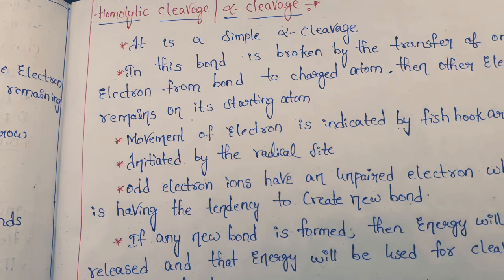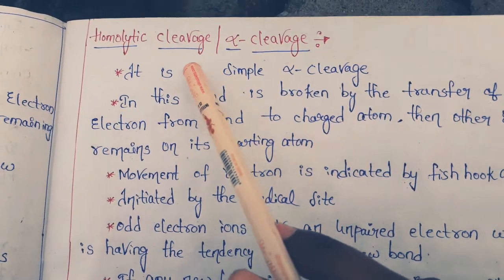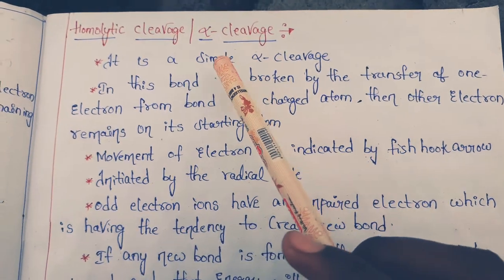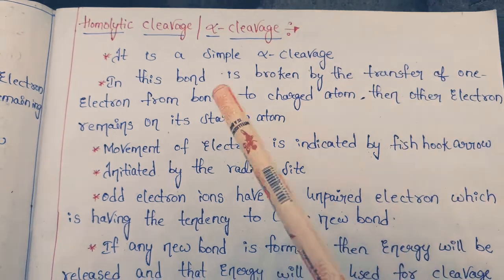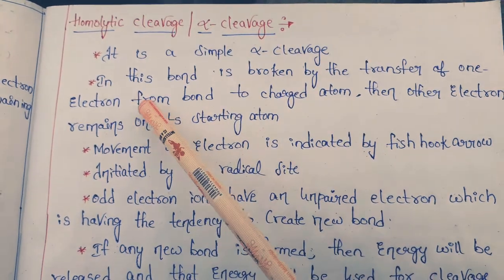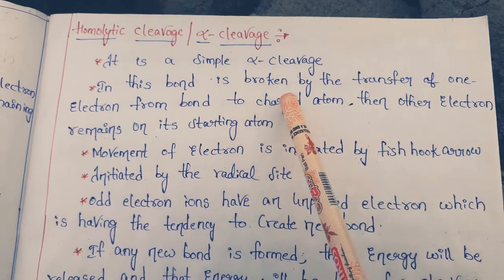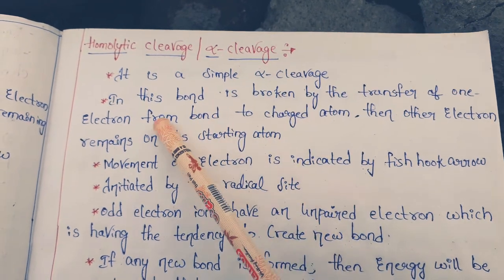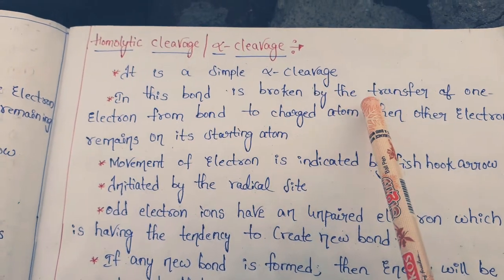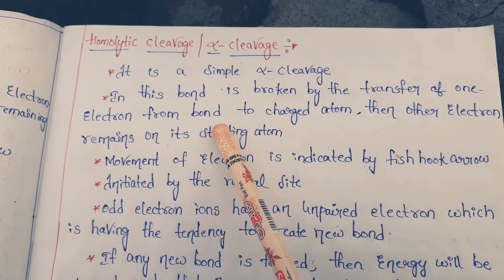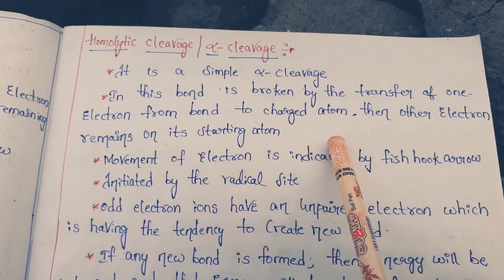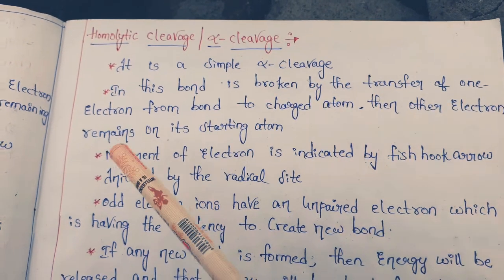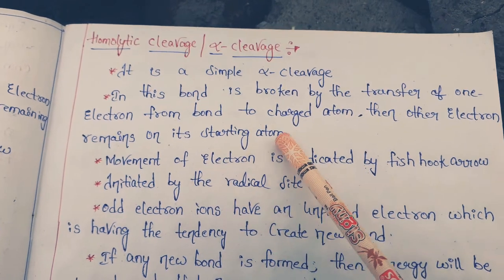Now we are discussing homolytic cleavage. Homolytic cleavage is a simple alpha cleavage. In this homolytic cleavage, the bond is broken by the transfer of one electron — a single electron. The bond is broken by the transfer of a single electron from the bond to the charged atom, and the remaining electron stays on its starting atom as usual.